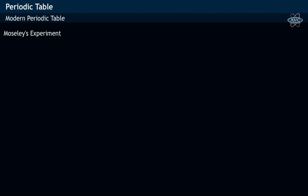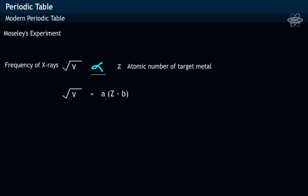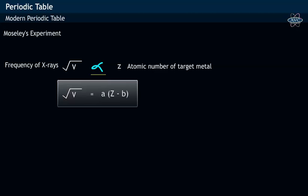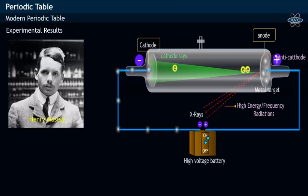Moseley from these observations related that the square root of frequency nu of emitted X-rays is directly proportional to the atomic number Z of target metal used. On removing the proportionality sign, the equation looks as square root nu equals A into Z minus B. Here in the equation, A and B refer to constants which remain the same for all elements. Based on these experimental results,